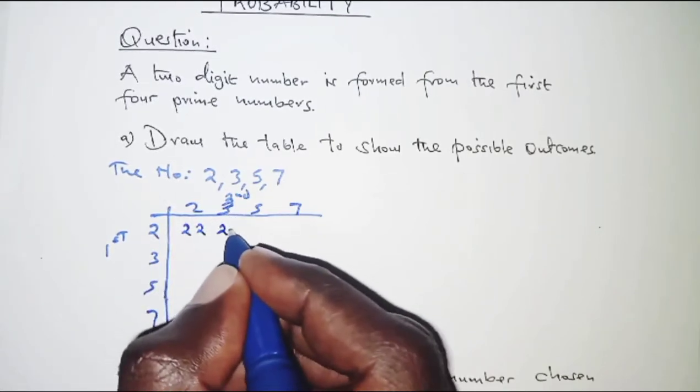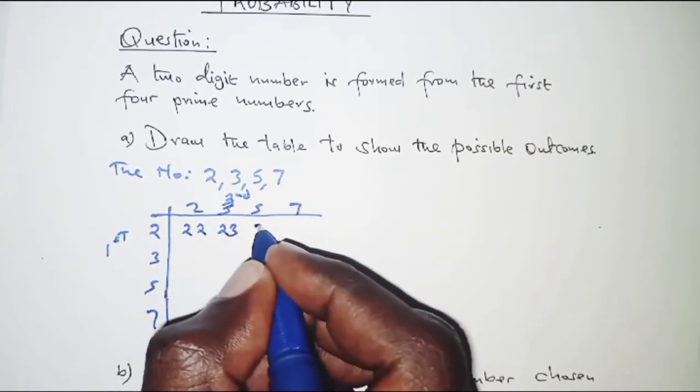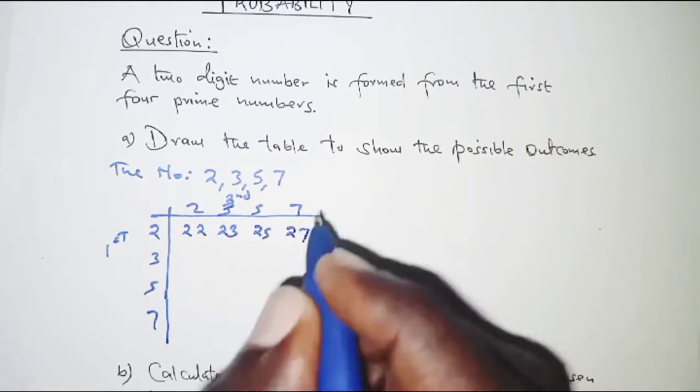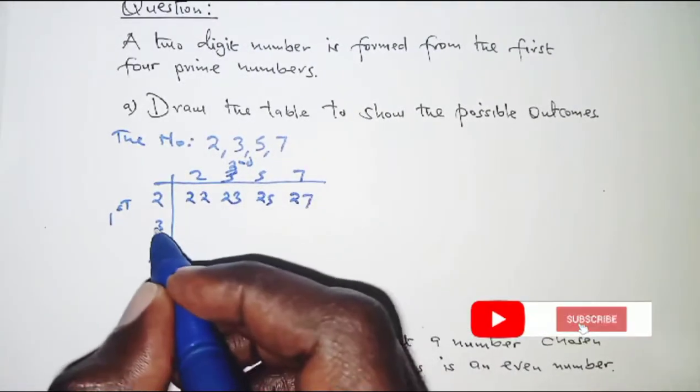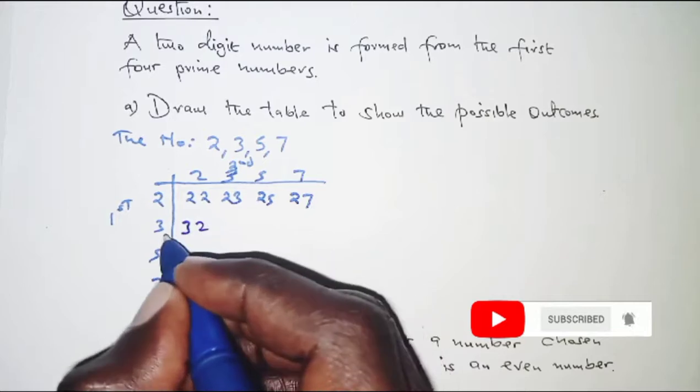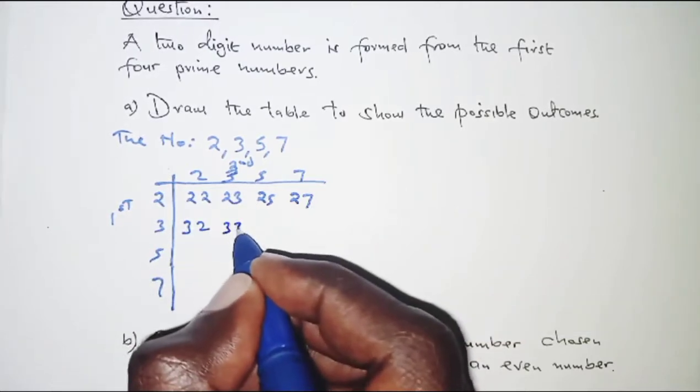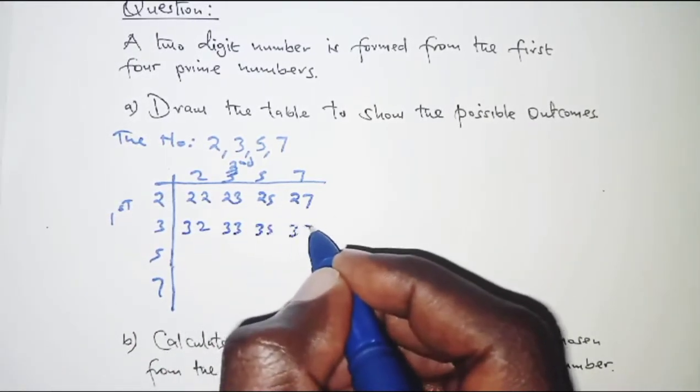Then here 23, 25 and 27. Following the same procedure we have 32, 33, 35, 37.